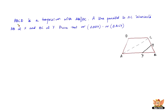Let us do another one. In this problem, ABCD is a trapezium with AB parallel to DC and a line parallel to AC — shown as a dotted line — intersects AB at X and BC at Y. We need to prove that the area of triangle ADX and the area of triangle ACY are equal.